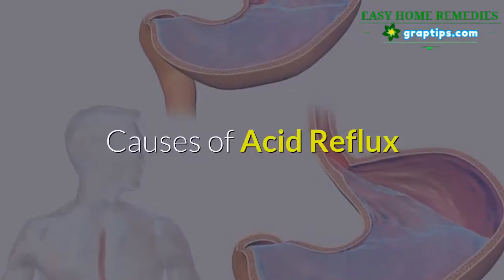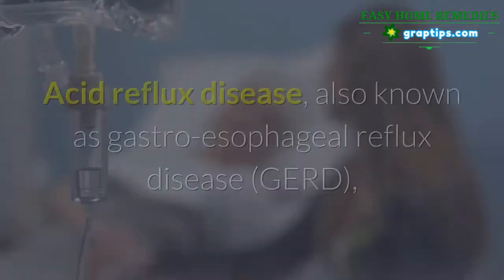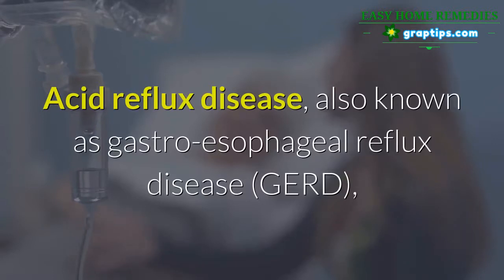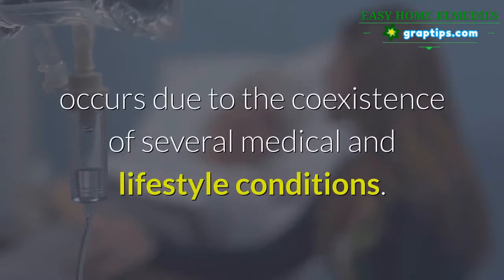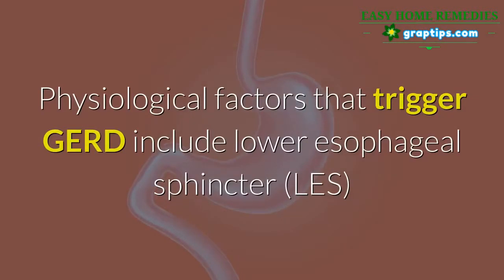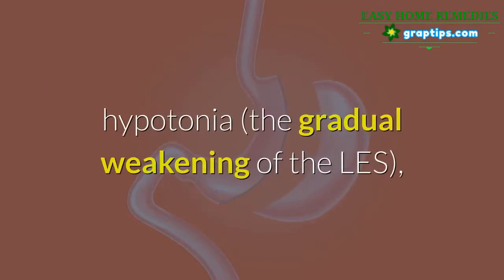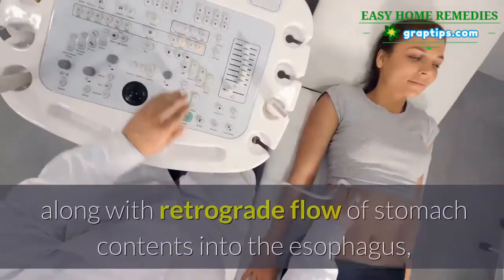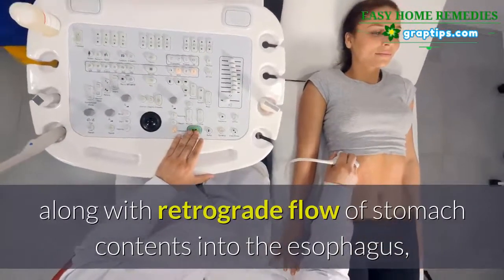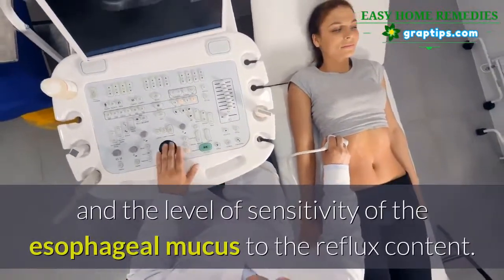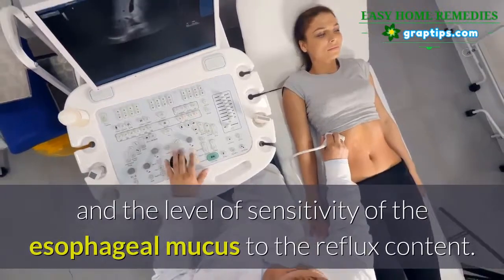Causes of acid reflux: acid reflux disease, also known as gastroesophageal reflux disease or GERD, occurs due to the coexistence of several medical and lifestyle conditions. Physiological factors that trigger GERD include lower esophageal sphincter (LES) hypotonia, the gradual weakening of the LES, along with retrograde flow of stomach contents into the esophagus, and the level of sensitivity of the esophageal mucus to the reflux content.